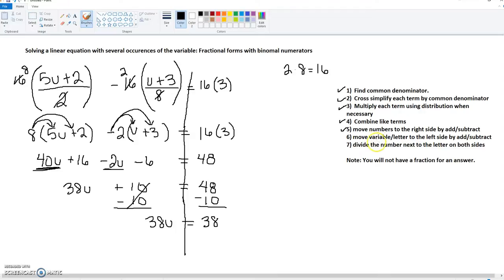Step 6 is here just if you had a variable on this side. Clearly on the right side, we don't have anything with a letter, so we skip this step. Our last step is to divide by 38 on both sides.